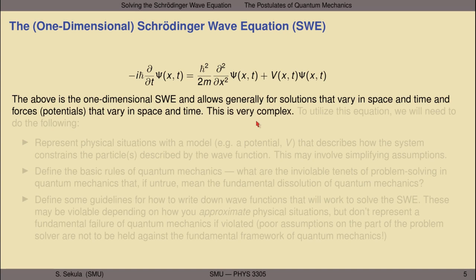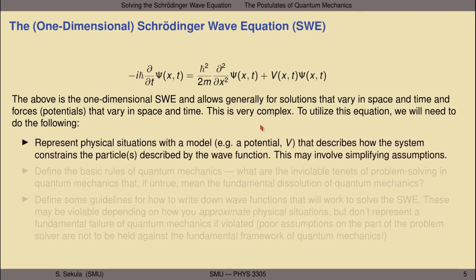This is very complex, so to utilize this equation we will need to represent physical situations with a model. Because the time piece on the left and the space piece in the middle are essentially fixed by the form of the equation, this usually boils down to varying the form of the potential V, which describes how the system constrains particles. This effort may involve simplifying assumptions in the aid of creating a simple model of the forces that can act on the particle, and these choices have consequences.